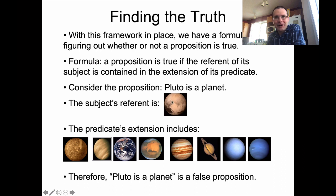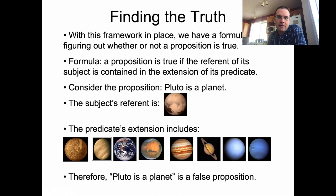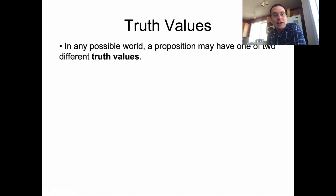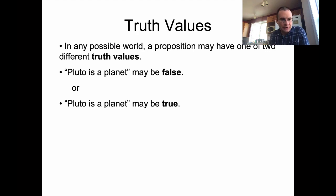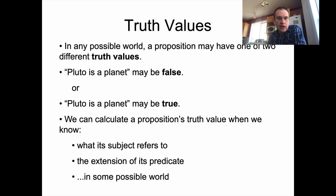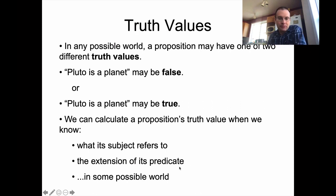When I'm talking about reference, I'm not talking about the picture of a thing — I'm talking about the actual thing out in the world. I just can't transport Pluto down here and stick it in my PowerPoint slides or hold Pluto up for you to see. Maybe in some other possible world, but not this one. In any possible world, a proposition may have one of two different truth values, and we can calculate a proposition's truth value when we know what its subject refers to and the extension of its predicate.